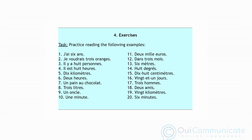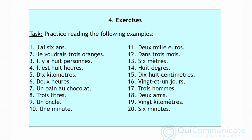Based on what we've just seen, let's practice saying the following. We have 20 sentences, and the answers are: 1) j'ai six ans; 2) je voudrais trois oranges; 3) il y a huit personnes; 4) il est huit heures; 5) dix kilomètres; 6) deux heures; 7) un pain au chocolat; 8) trois litres; 9) un oncle; 10) une minute; 11) deux mille euros.